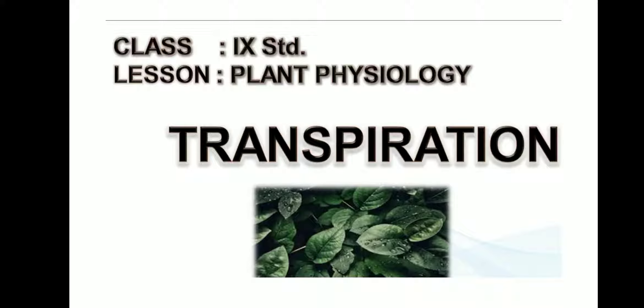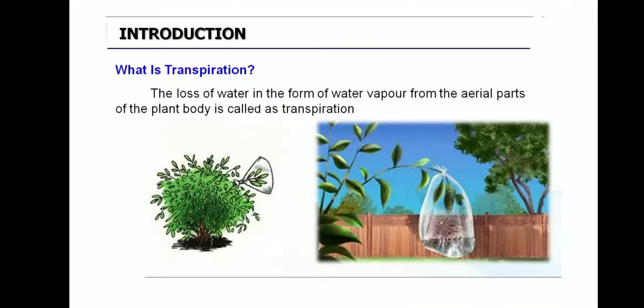Where does this transpiration occur? You all know this occurs in plants. We already discussed about photosynthesis in the previous class. For the process of photosynthesis, we need chlorophyll, water, carbon dioxide, and sunlight. Only with this, the plant can prepare food by the process of photosynthesis. So water is very, very essential for the process of photosynthesis.